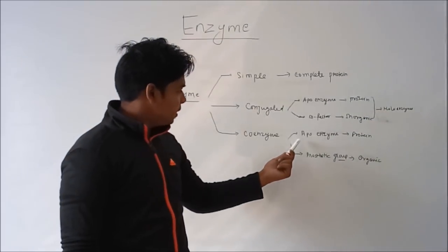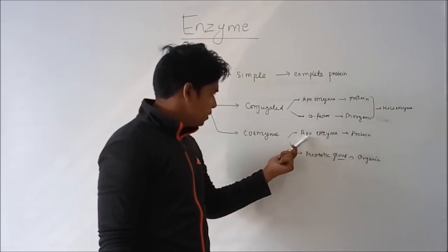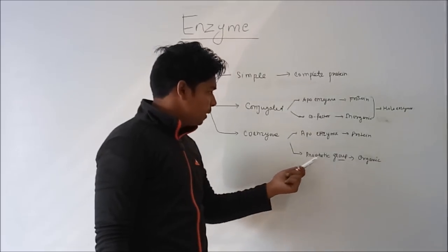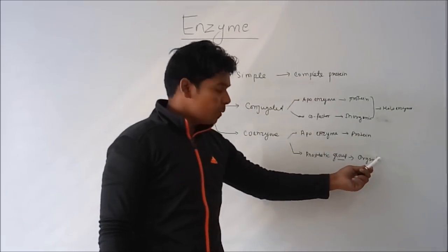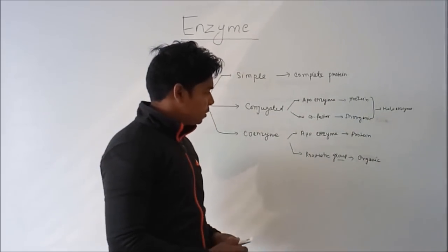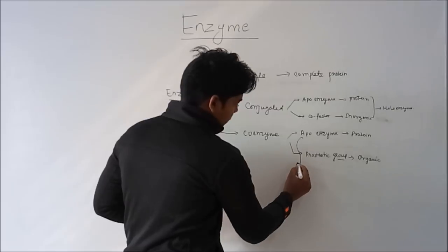Similarly for the coenzyme, one part of coenzyme is apoenzyme and second part of coenzyme is prosthetic group. The prosthetic group of coenzyme is made of heavy organic compounds, and apoenzyme and prosthetic group make the form of holoenzyme.